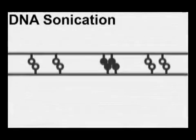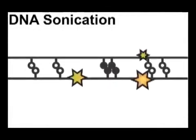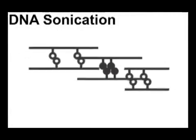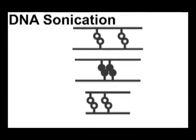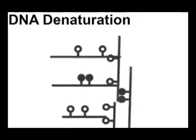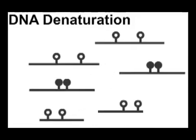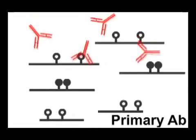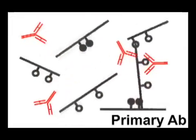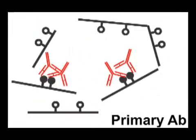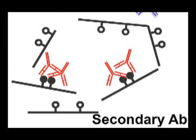MeDIP is accomplished by first sonicating DNA into fragments ranging in size from 300 to 1,000 base pairs. The sonicated DNA is then denatured at 95 degrees Celsius. Primary antibodies, which recognize 5-methylcytosine, are added and allowed to bind methylated DNA fragments.